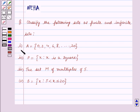The first part is set A which is equal to the set containing the elements 0, 2, 4, 6, 8 and so on till 20. The second part is set P equals x such that x is a square. Third part is the set M of multiples of 5, and the fourth part is set B which is equal to x such that 5 is less than x is less than or equal to 20.